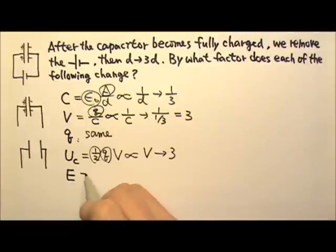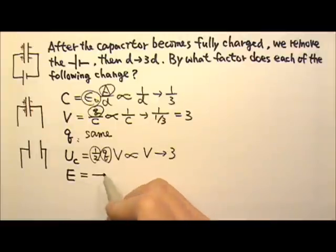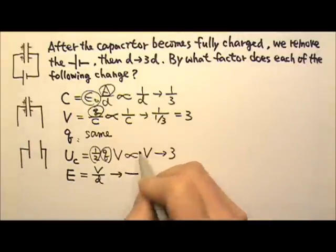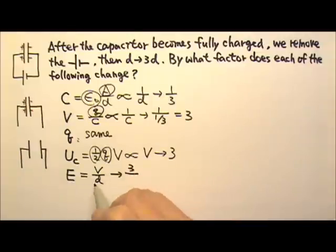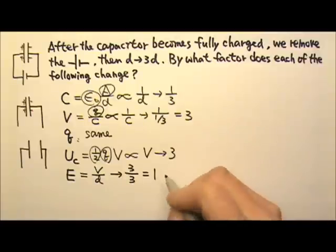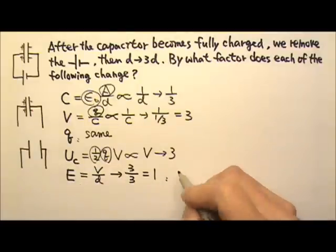Again, the electric field, that's uniform electric field. So V equals ED. E would equal V over D. So this is proportional to V over D. And the V triples, so does the plate separation. So this gives me one. That means the electric field strength between the two plates would stay the same.